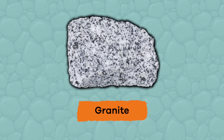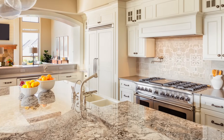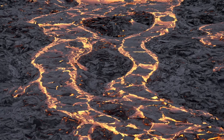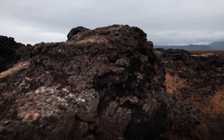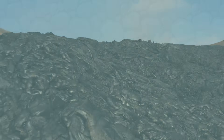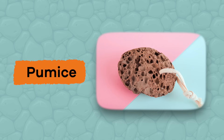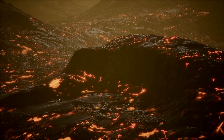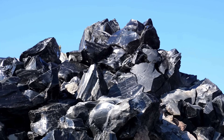Granite is an example of intrusive igneous rock — you've probably seen granite before, as many countertops are made of granite too. On the other hand, extrusive igneous rocks are formed when molten lava cools very quickly on the surface of the Earth. Because these rocks cool very fast, it doesn't leave much time for crystals to form. Rocks like basalt, andesite, and pumice result from this process. Sometimes the lava cools so fast that no crystals form at all, and obsidian rock is formed. That's a beautiful rock!